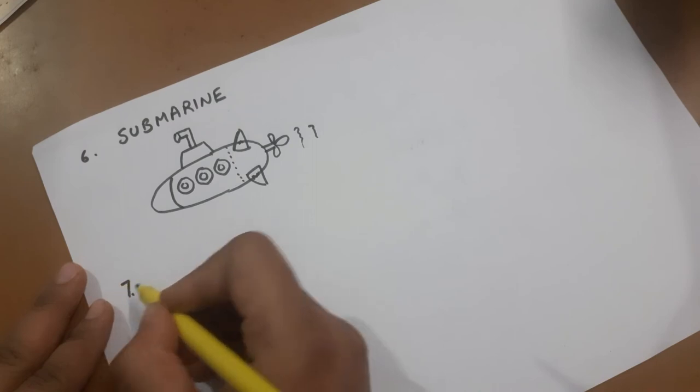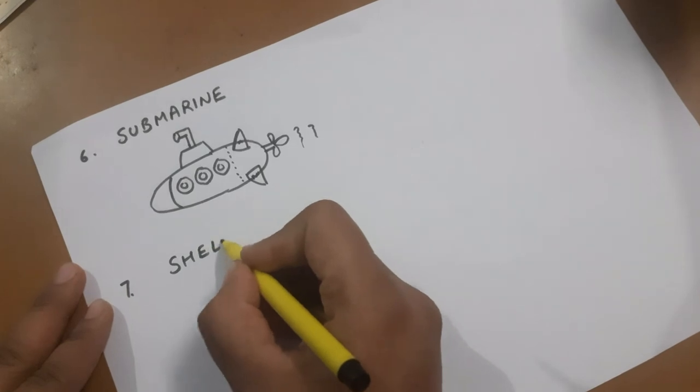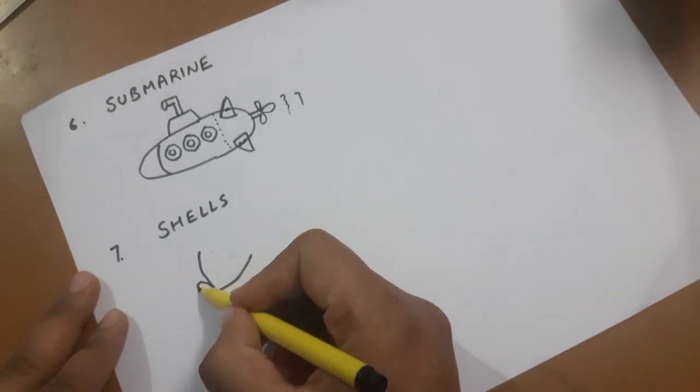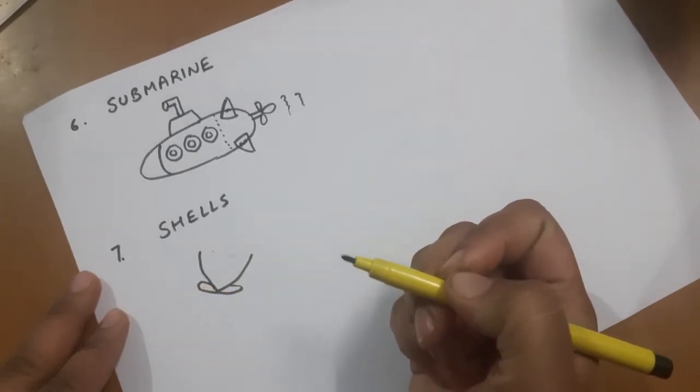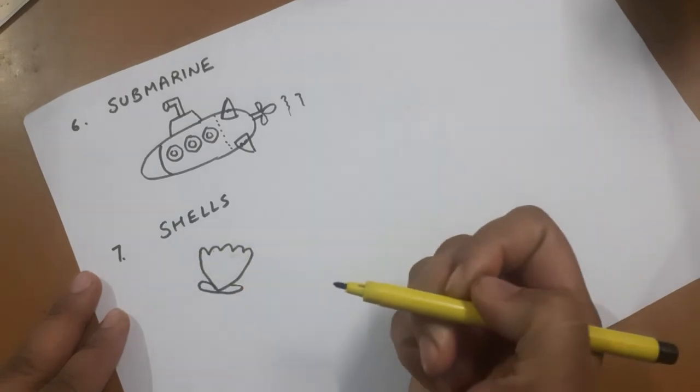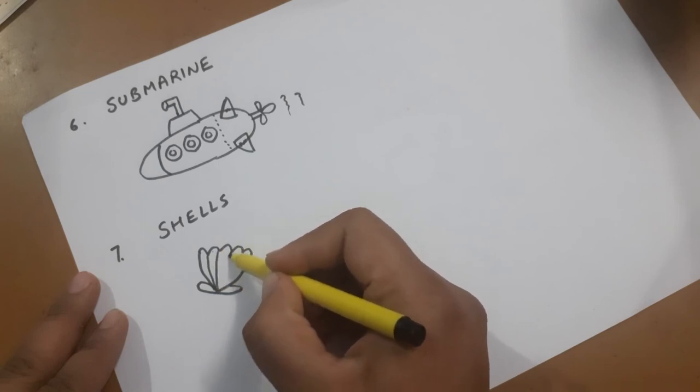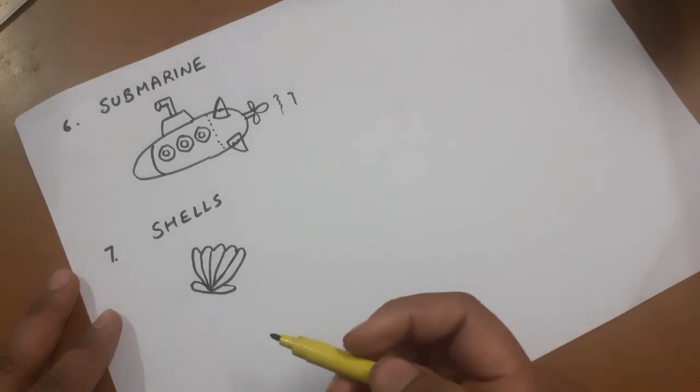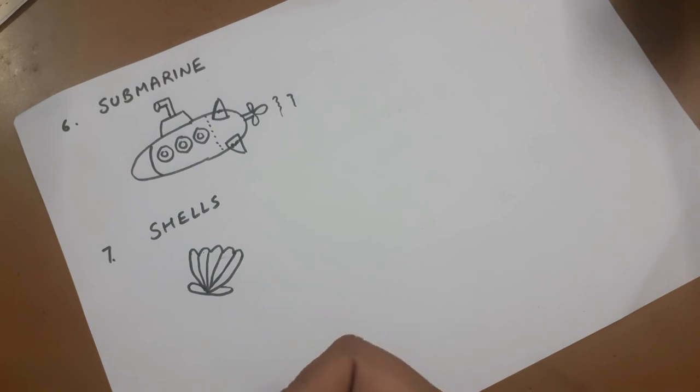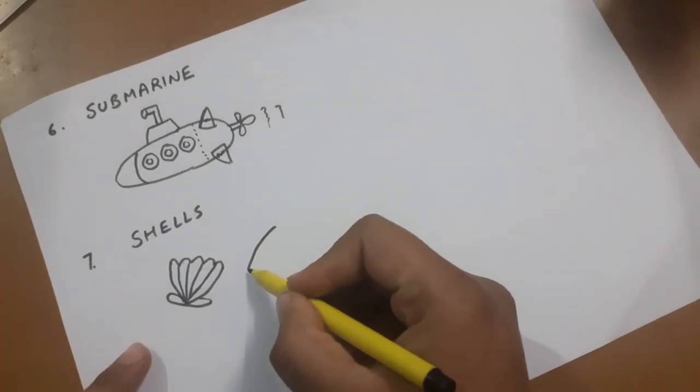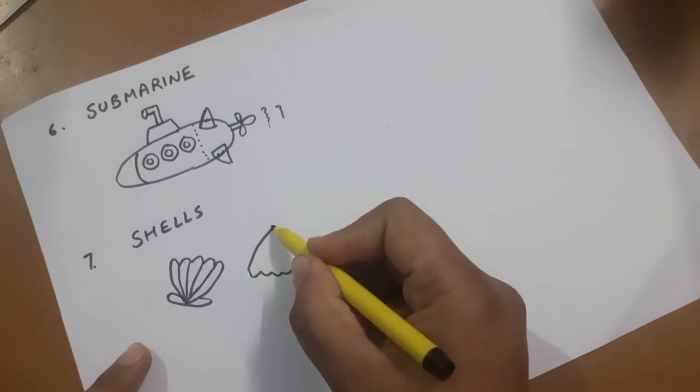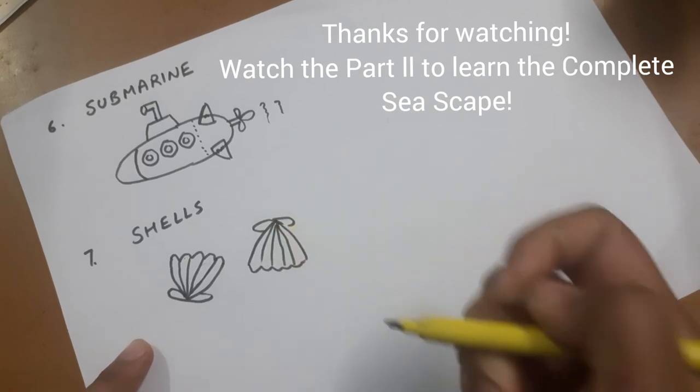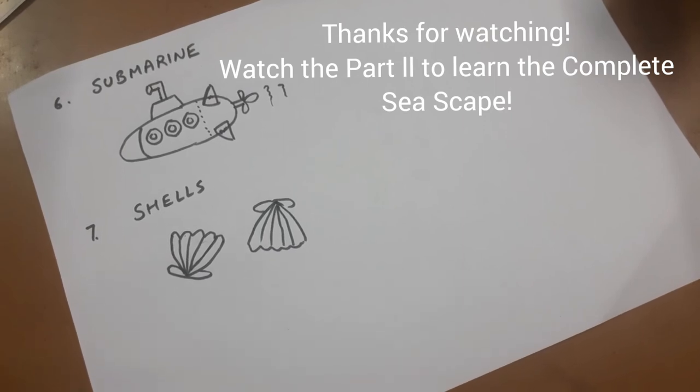Last, we are going to learn to make some shells. Making again a V-like shape, then adding these two curves. Make a zigzag curved line and then add some lines. Shell is very easy, like all the other things that we have learned today. I'll make another one just to show you once again. I hope you enjoyed today's tutorial. We will come back with the next part very soon.